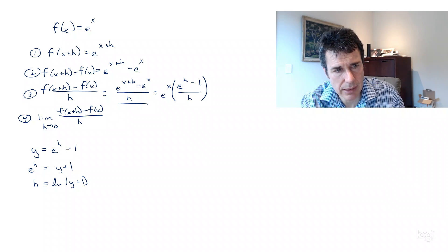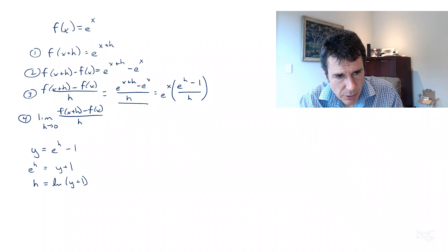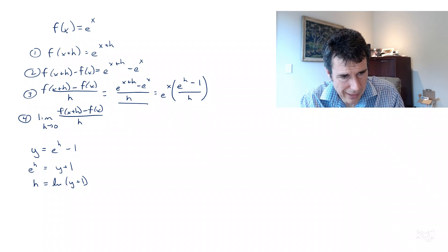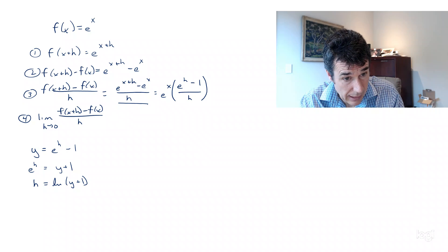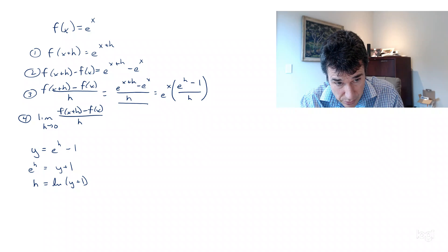Now, if I think about this limit as h goes to zero, what does y do? Well, y + 1 had better go to 1. Natural log of 1 is 0, so y goes to zero.